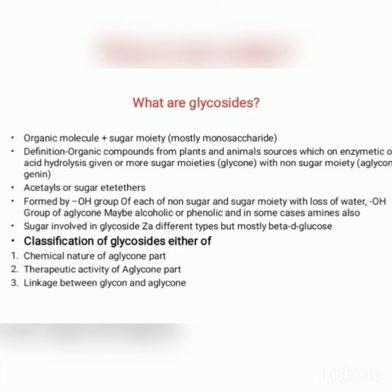Glycosides are organic molecules plus a sugar moiety, mostly monosaccharides. The definition of glycosides is: organic compounds from plants and animal sources which on enzymatic or acid hydrolysis give one or more sugar moieties — the glycone — with a non-sugar moiety, the aglycone. Acetals or sugar ethyl esters are formed by the OH group of each of the non-sugar and sugar moiety with loss of water. Classification of glycosides is based on: first, chemical nature of the aglycone part; second, therapeutic activity of the aglycone part; and third, the linkage between glycone and aglycone.